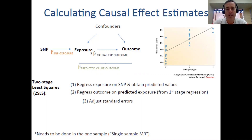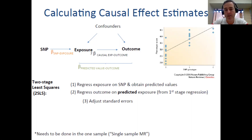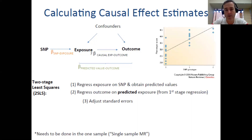The idea behind two-stage least squares is that we conduct two regressions. In the first regression, we regress the exposure on the SNP and obtain predicted values for the exposure. In the second stage regression, we then regress the outcome on the predicted values of the exposure from the first stage regression. This regression coefficient is our estimate of the causal effect of the exposure on the outcome.